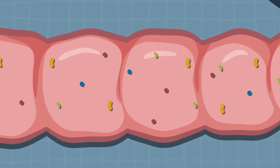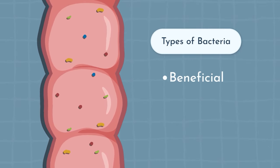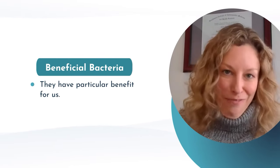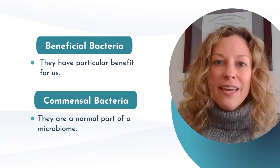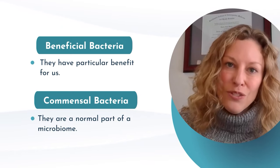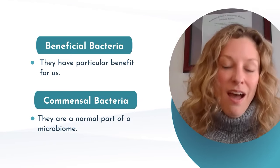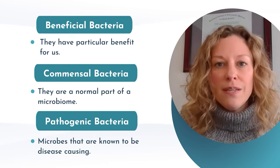When talking about bacterial dysbiosis, there are different types. We categorize bacteria in the colon in three ways: beneficial, meaning they have particular benefit for us; commensal, meaning they are a normal part of the microbiome but can cause trouble if they overgrow; and pathogenic, meaning those microbes are known to be disease-causing. When we see a patient who may have dysbiosis, we absolutely want to identify exactly where the imbalance resides and what organisms are involved so we can better decide how to help them.